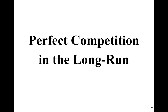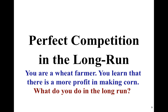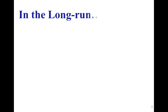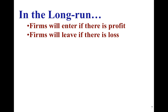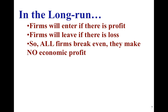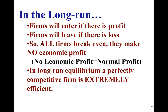Now let's take a look at the long run. Here's our example of wheat and corn. In the long run, perfect competition means that firms can enter and leave at will — there are low or no barriers to entry, free entry and exit. Firms will enter if there's a profit and leave if there's a loss. In the long run, all firms break even, making zero economic profit, which is also called normal profit.